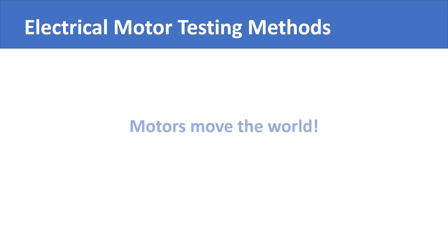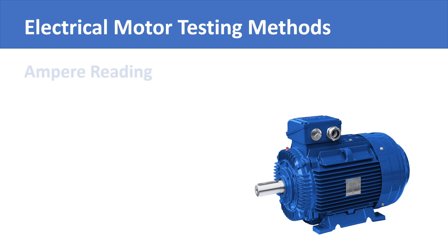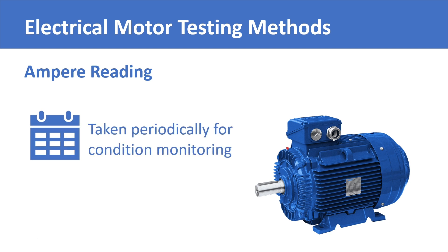Motors move the world. Therefore, maintenance and reliability professionals are supposed to know about electric motors as well as some common techniques used for monitoring their condition and testing them. The simplest way of telling if something is wrong with a motor is to simply test the current it is drawing from the supply. This reading can easily be taken on a daily, weekly, monthly, or any other time interval to reveal any hidden developing defects inside the motor.